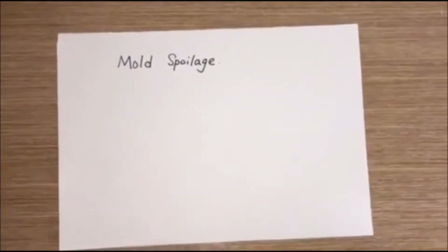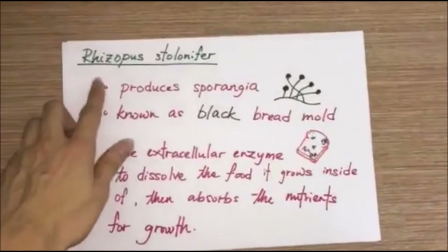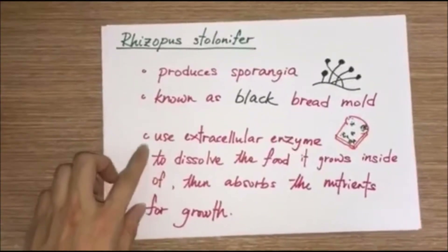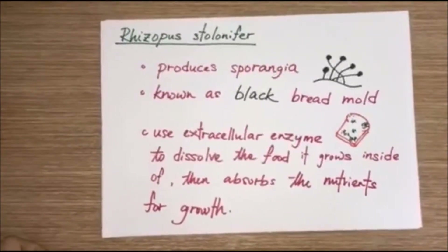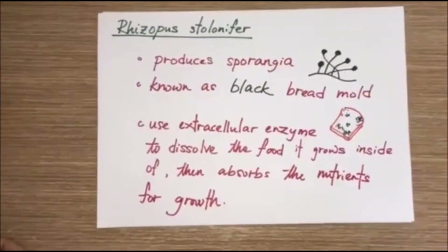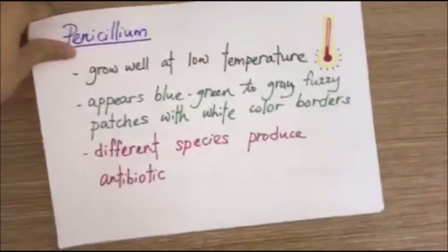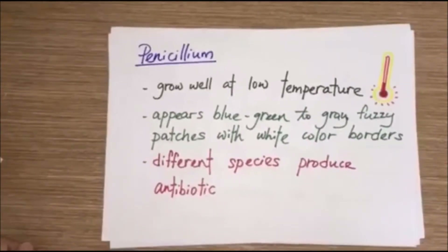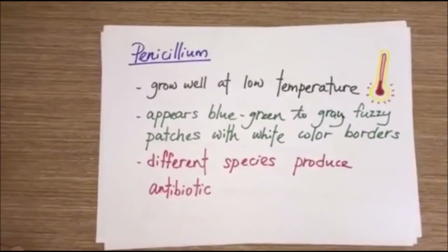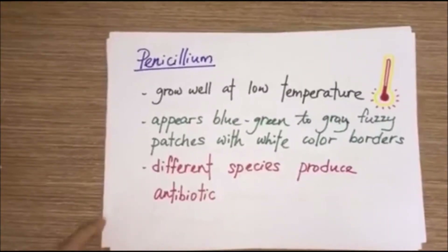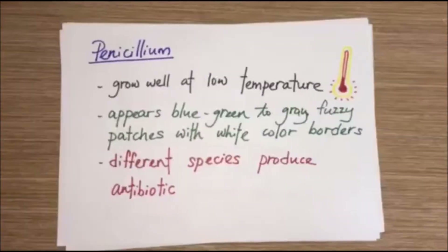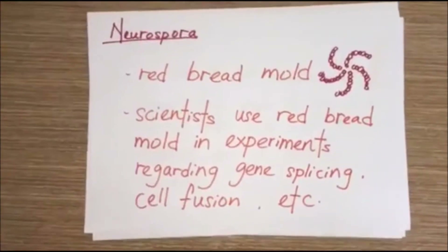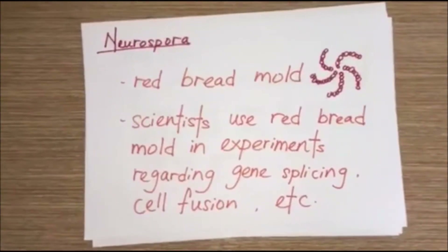The third spoilage is mold spoilage. Rhizopus stolonifer produces sporangia and is known as black bread mold. It uses extracellular enzymes to dissolve the food it grows inside, then absorbs the nutrients for growth. Penicillium grows well at low temperatures and appears as blue-green to grey fuzzy patches with white borders. It is a different species used to produce antibiotics. Neurospora is a red bread mold, and scientists use red bread mold in experiments regarding gene splicing, cell fusion, and more.